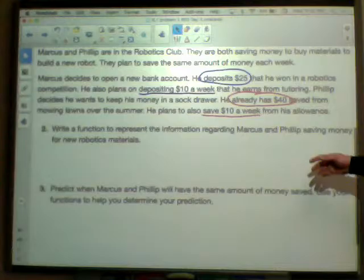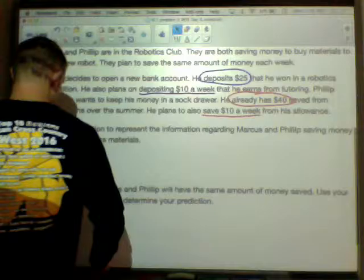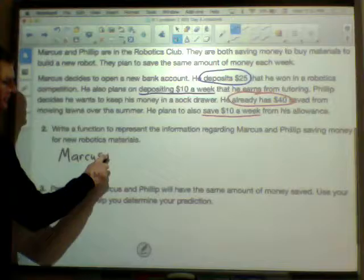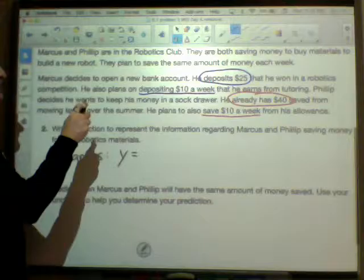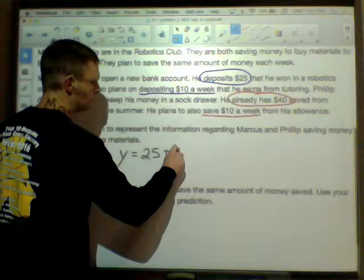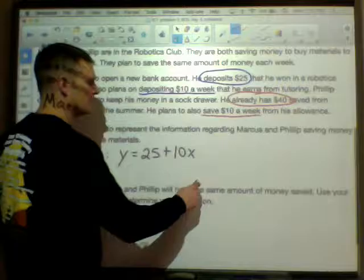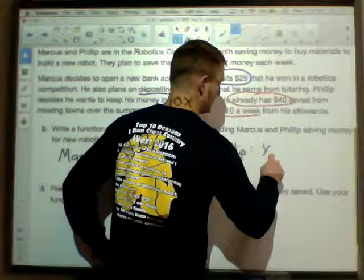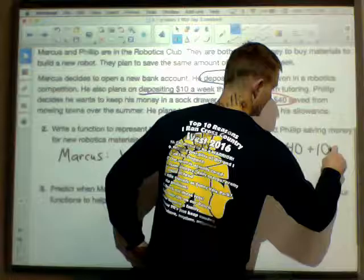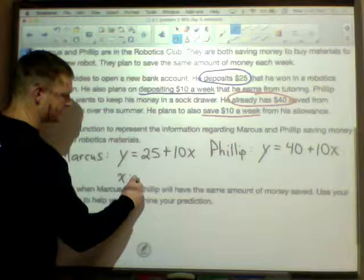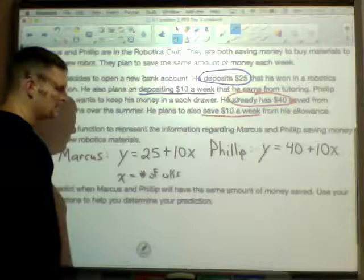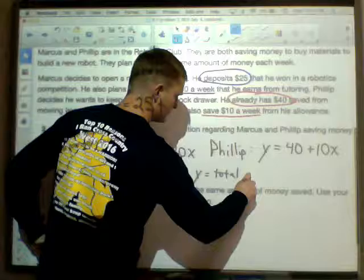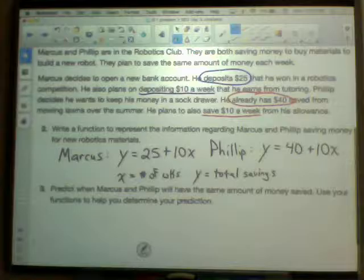Now it says write a function to represent the information regarding Marcus and Phillip. So for Marcus, since these are the notes, we have the equation y equals - he already has $25 and he's gonna save 10 per week, so it'd be 25 plus 10x or 10x plus 25, doesn't matter what order you write it in. And then for Philip, he's already saved up $40 and he also plans on saving $10 per week. Now we do need to define what X and Y are. In this case, X is the number of weeks, and Y is the total savings.